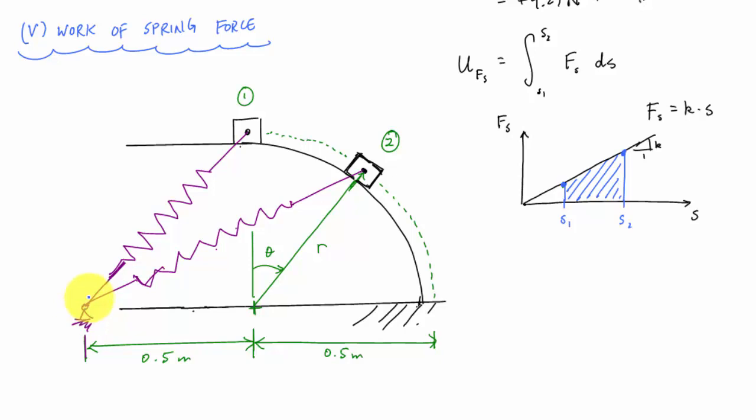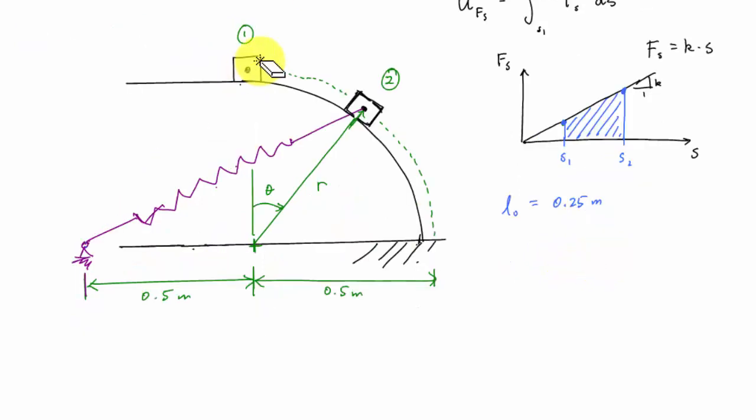All I need to know is the distance from here to here. Now my unstretched length L0 is equal to 0.25 meters. This is the length of my spring at one. And if I just look at this triangle right here, like this, I know that because of this circular path here, this distance is also 0.5. And L1 is just 0.5 squared plus 0.5 squared square root or 0.5 times the square root of two, which will give me 0.707 meters.